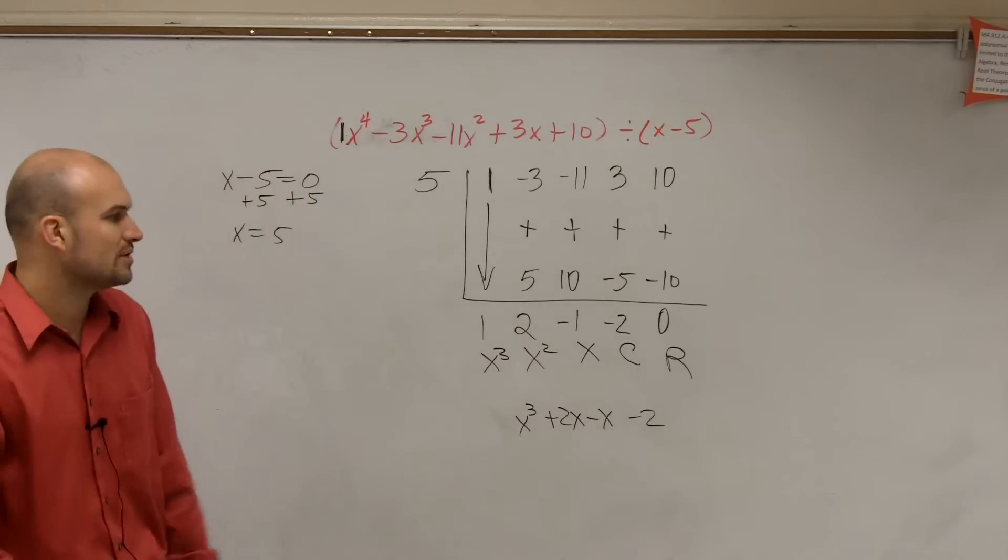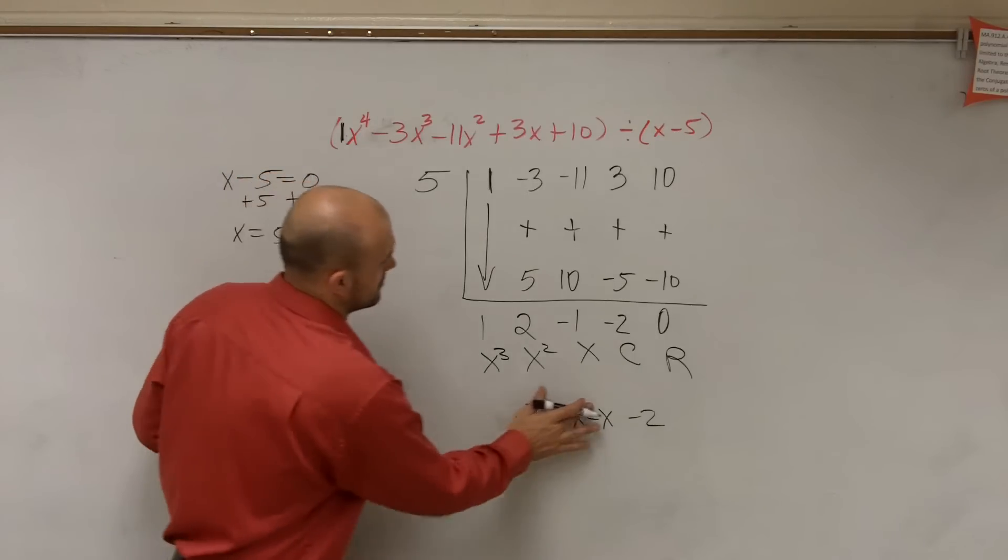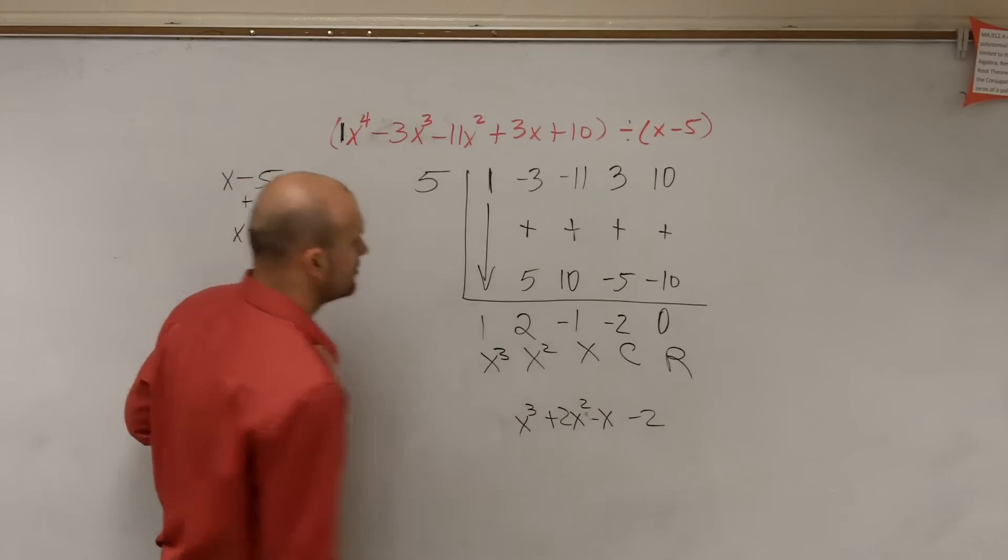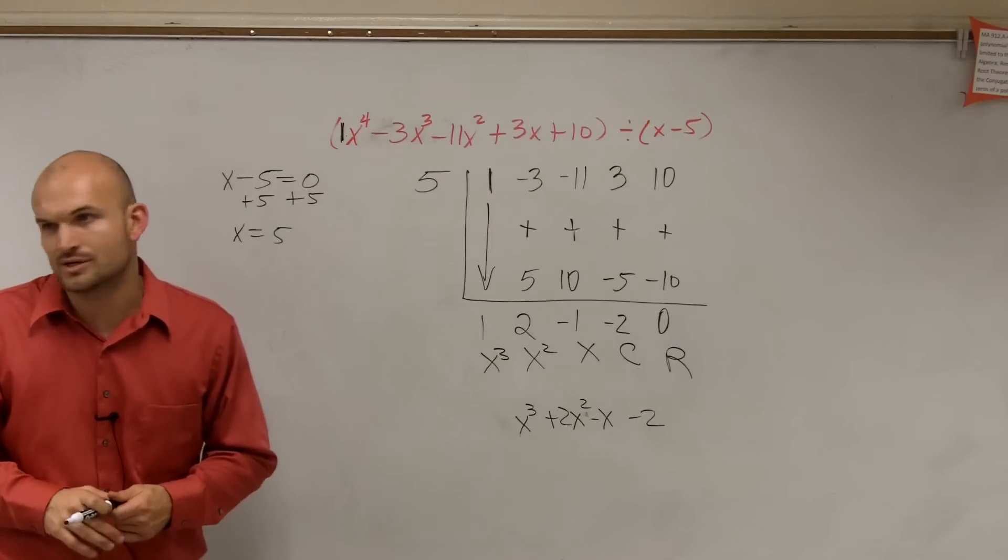So you can just write x cubed plus 2x squared, sorry, plus 2x squared minus x minus 2. You don't need to write plus a remainder 0.